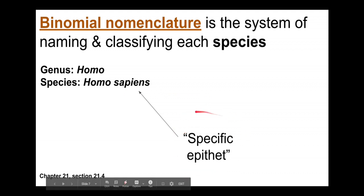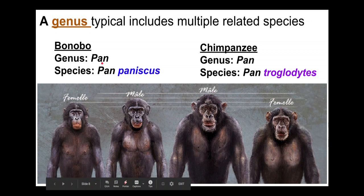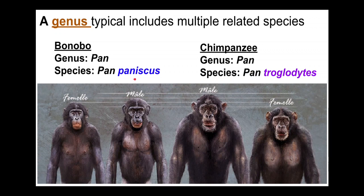You aren't expected to know that term, but you will hear it from time to time. A genus often has multiple related species. So within the genus Pan, there is Pan paniscus and Pan troglodytes. Pan is the genus; paniscus is the species name — the specific epithet. Pan is the genus name; troglodytes is the specific epithet.